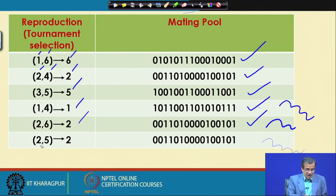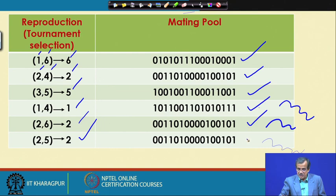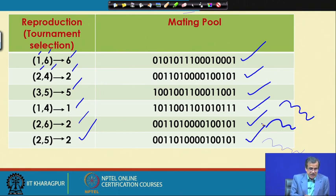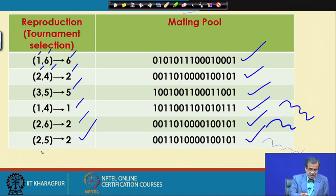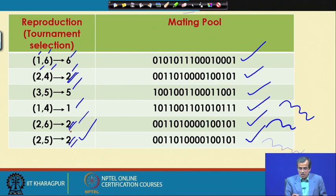For the last tournament, the sixth tournament, we are selecting the second and fifth, and out of second and fifth, the second one is better, so I am going to keep a copy in the mating pool — that is the second GA string. One very important thing to be noted: if you find a very good string, there is a possibility there could be multiple copies of that particular GA string in the mating pool. We can see that the second GA string has been copied thrice.